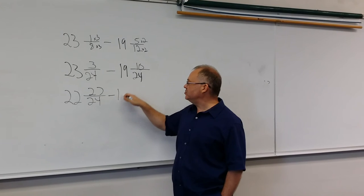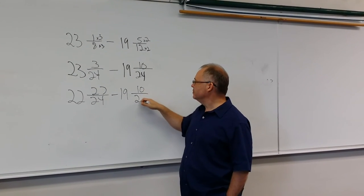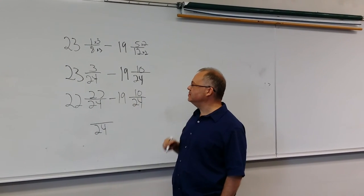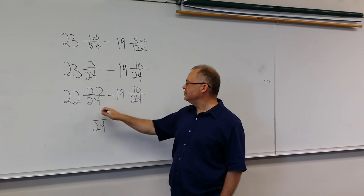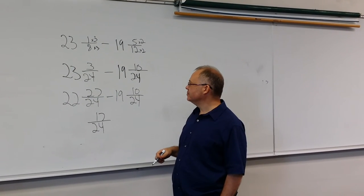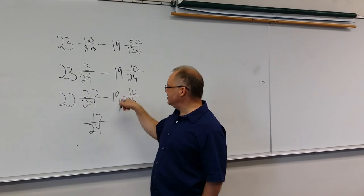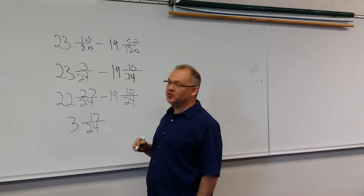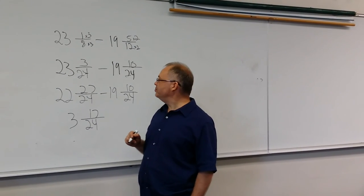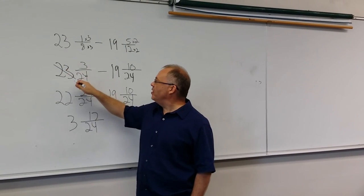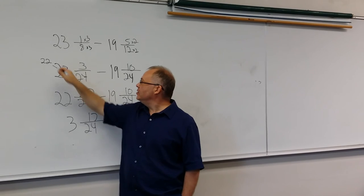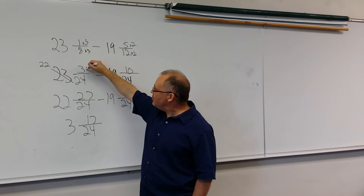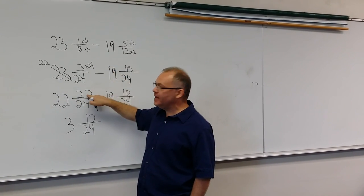And let's just wrap it up. And now out of 24, 27 minus 10 is 17. Now 22 minus 19 is 3. Can this fraction be reduced? No. And again, we borrow 1 from the 23 to make it 22. And every whole that we borrow is 24 parts that we added to the 3 to make 27.